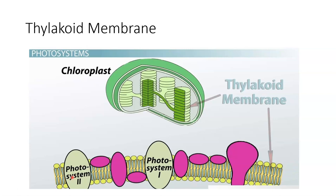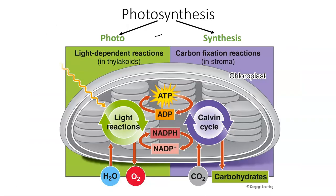A lot of the photosynthesis process occurs in the thylakoid membrane. The term photosynthesis itself gives us a clue — 'photo' means light, which relates to the light reaction, and 'synthesis' means make, which relates to building our glucose molecule. Photosynthesis consists of two components: the light-dependent reactions and the carbon fixation reactions. The light-dependent reactions occur in the thylakoids, while the carbon fixation reactions occur in the stroma.